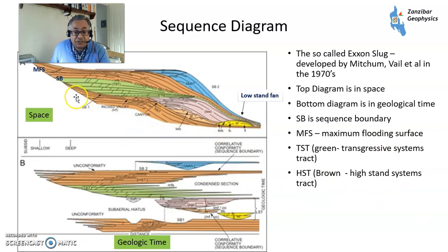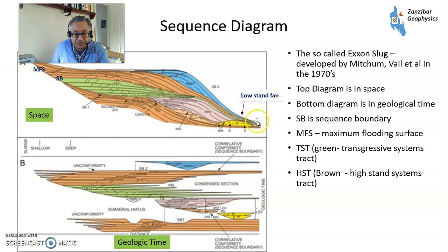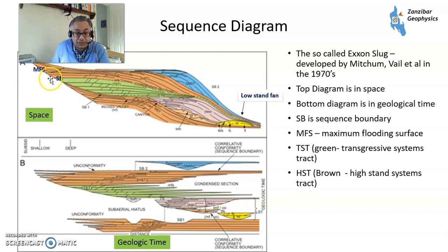This is the Exxon slug diagram — I'll go through it briefly. You've got a sequence boundary coming through here marked SB, which is the erosional surface. Near to the coast — coast is this way, deep sea is that way — you've got erosion, then deposition in the deep sea with something called a low stand fan: turbidite reservoirs, for example. Then sea level starts going up and you're starting to get the transgressive systems track coming over the low stand, with sediment piling up and moving in.